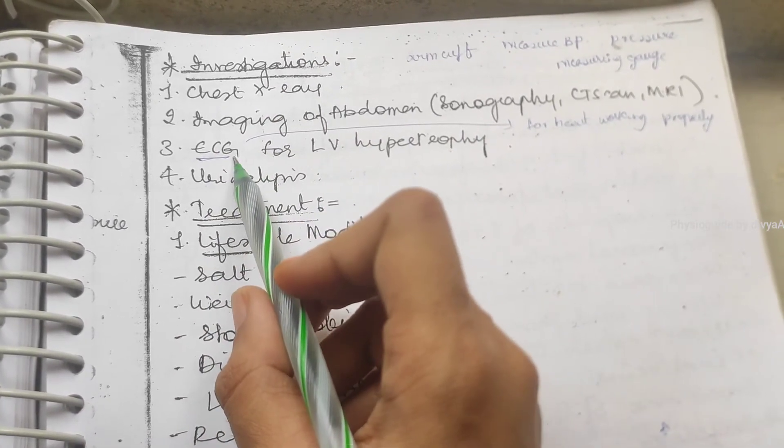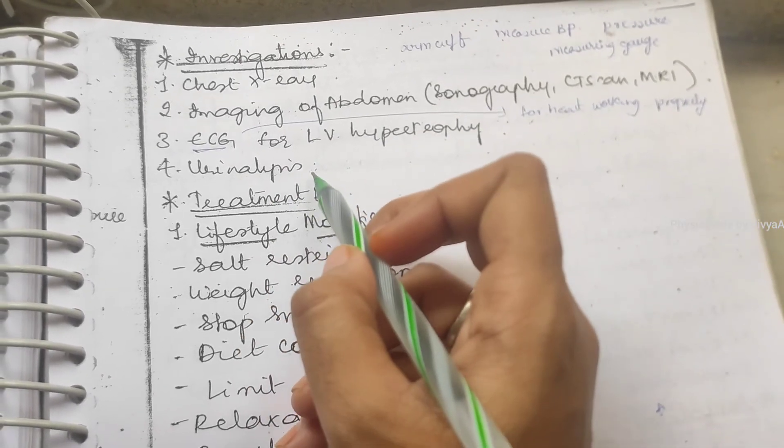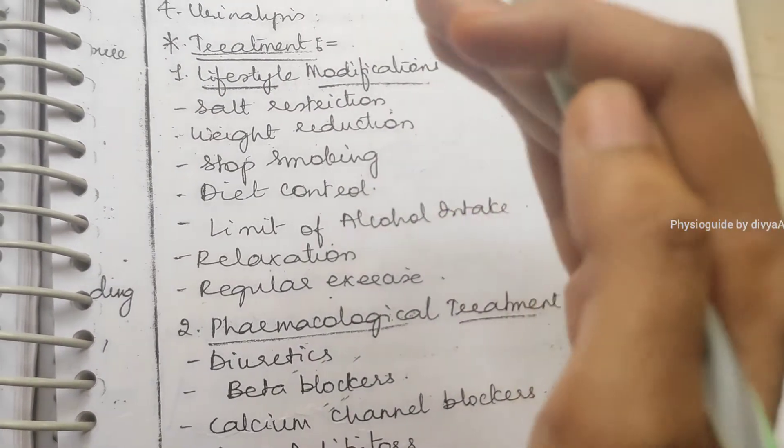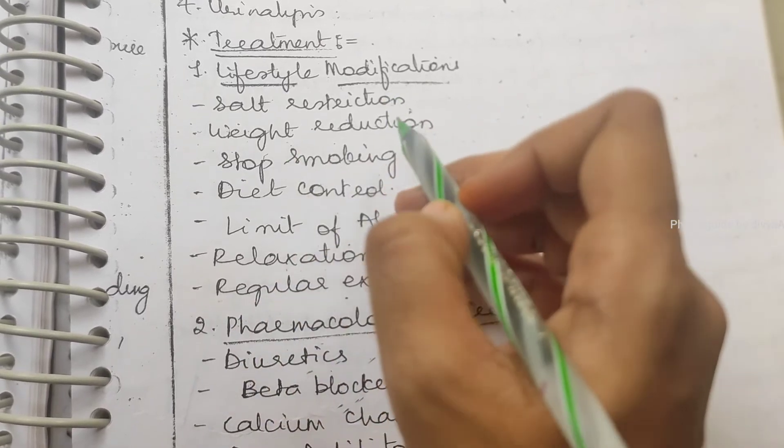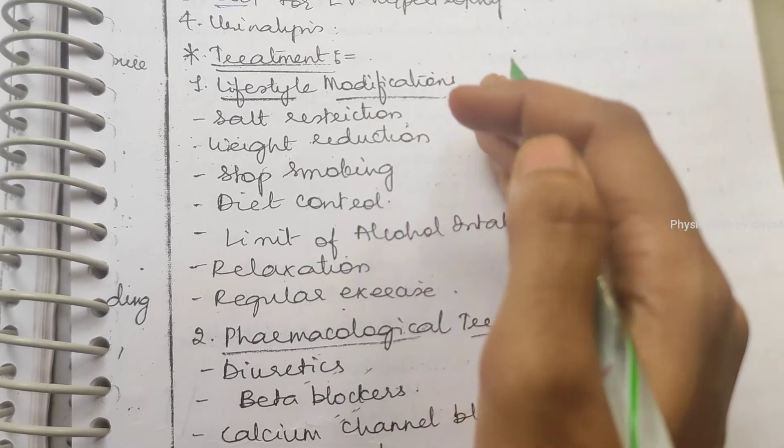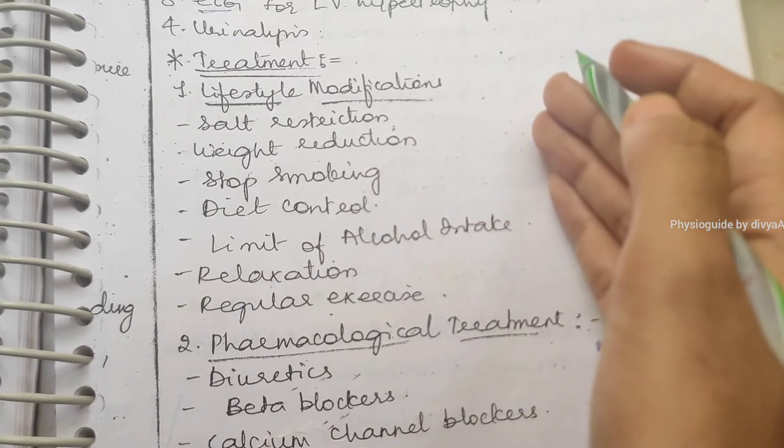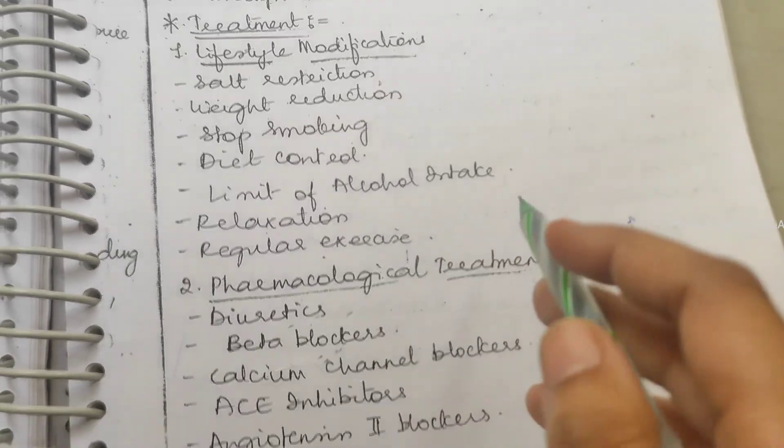Treatment: lifestyle modifications. What we need to do? Like decrease salt in our diet, in our daily routine. Weight reduction, we must decrease the weight. Stop smoking, diet control, limit alcohol intake, decrease stress, relaxation, and regular exercises need to be done to lead a healthy and proper life.